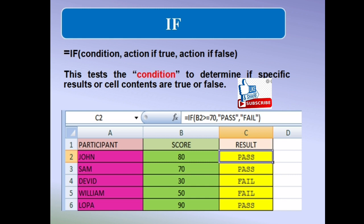Here, the condition is: if B2, the score, is greater than or equal to 70, then the result of the participant will be PASS. Otherwise, if cell B2, the score, is less than 70, then the result of the participant will be FAIL.